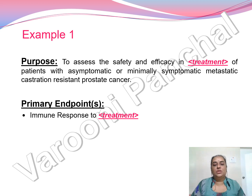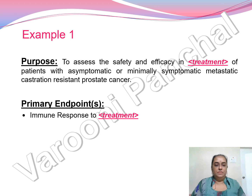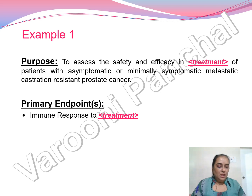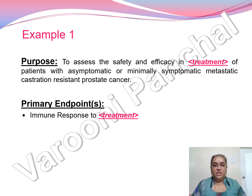For the first clinical trial example, the objective is to assess the safety and efficacy of a specific treatment in patients with asymptomatic or minimally symptomatic metastatic castration-resistant prostate cancer. Since it is a safety and efficacy study, the primary endpoint is the immune response to the specific treatment.